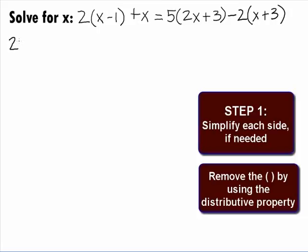On the left side, we can distribute the 2 times the x minus 1 and get 2x minus 2 plus x equals. On the right side, 5 times 2x plus 3 is 10x plus 15 and negative 2 times x plus 3 gives us a negative 2x minus 6.